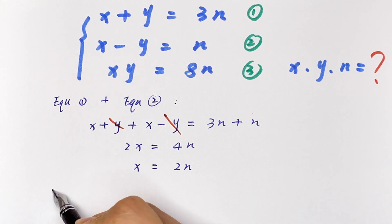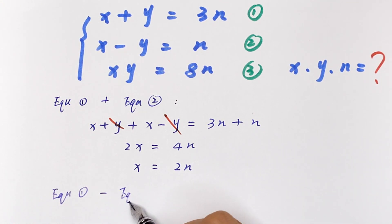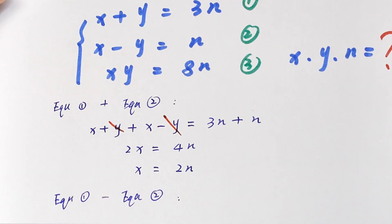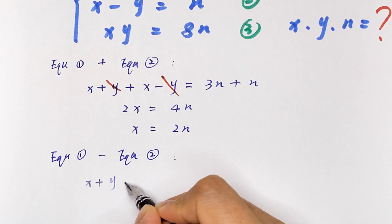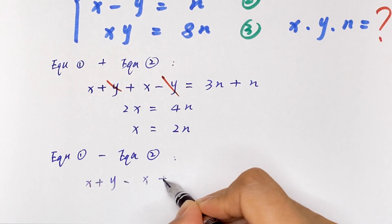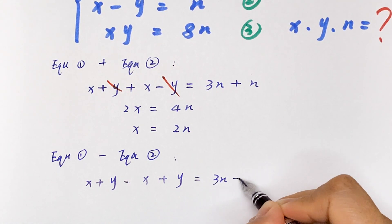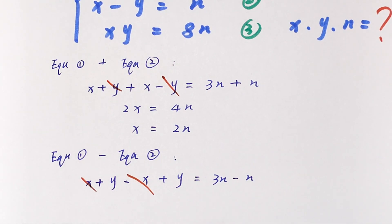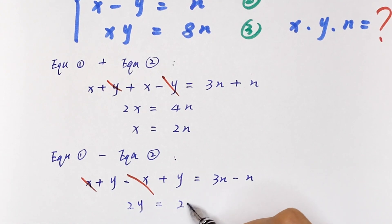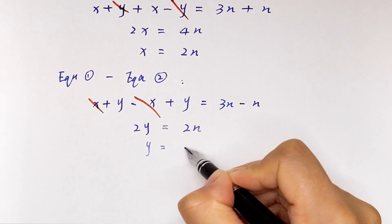Then we let equation 1 minus equation 2: x plus y minus x minus y is equal to 3n minus n. Then x will cancel, so 2y is equal to 2n, so y is equal to n.